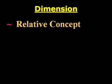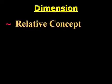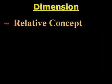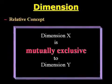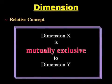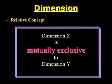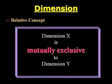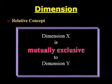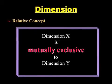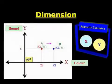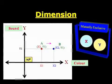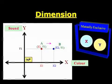Dimension is a relative concept we use to understand reality. One dimension is mutually exclusive to another dimension — I emphasize the word mutually exclusive. We can explain this concept using the following Cartesian diagram.